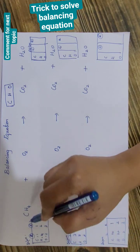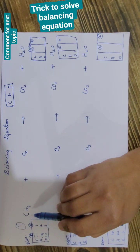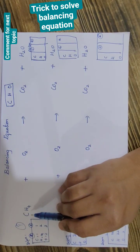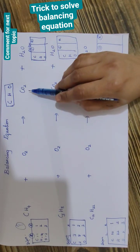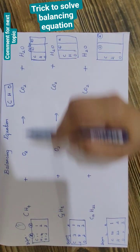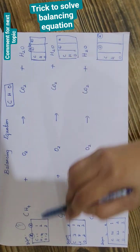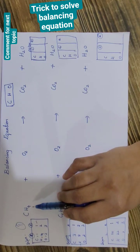For the first question, how many carbons are on the left side? We have one carbon on the left side and one carbon on the right side, so carbon is balanced by itself. Then we'll go for hydrogen.